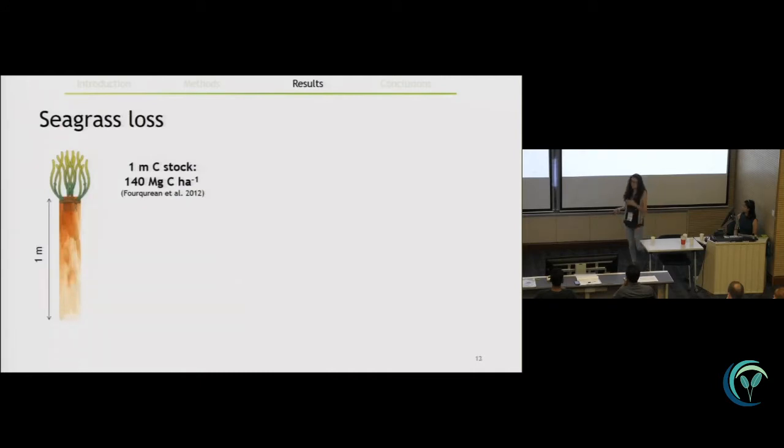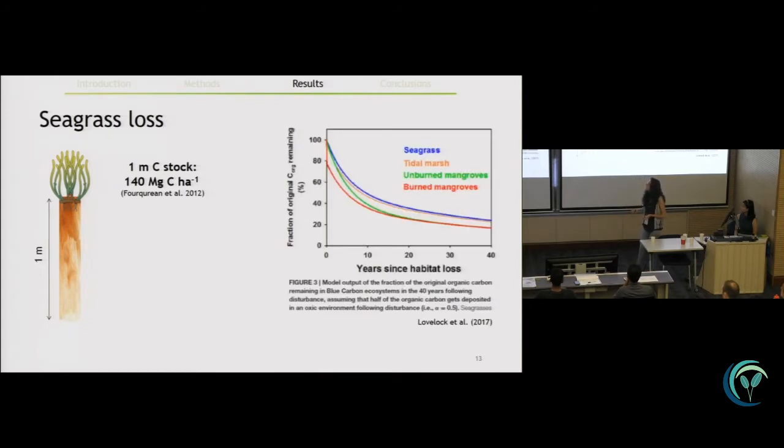And then to finish, I would like to highlight that seagrass accumulate carbon at rates lower than estimated previously. That doesn't mean that the carbon stocks in seagrass meadows are low. The carbon stocks in seagrass meadows are about 140 tons of carbon per hectare and this is the result of the accumulation of carbon of many, many years.